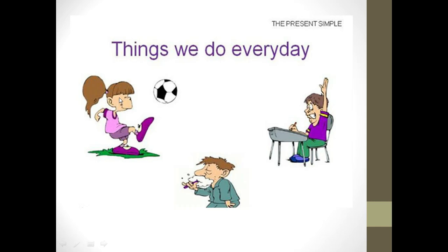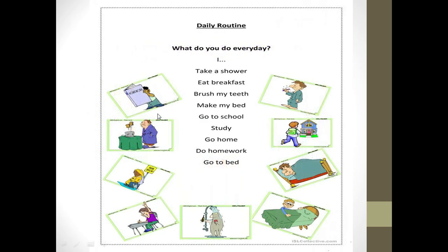This is the daily routine of that girl — every day she plays, so you are going to say she plays football. You brush your teeth daily, so you say he brushes his teeth daily. You study every day — this is your routine — so you say he studies every day. For the actions or things that we do every day, we use simple present tense. What do you do every day? I take a shower, eat breakfast, brush my teeth, make my bed, go to school, study, go home, do homework, go to bed — these are all actions you do daily.